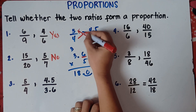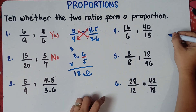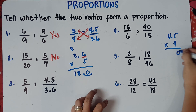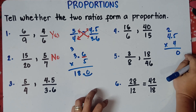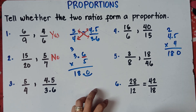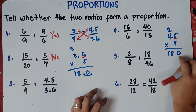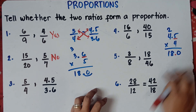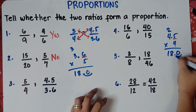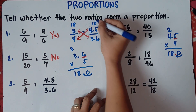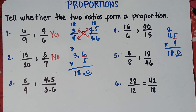Now let's check 4 times 4.5: 4 times 5 is 20, zero carry 2; 4 times 4 is 16, plus 2 is 18. We have one decimal place, so we move one unit from right to left — the answer is 18. Same answer! 18 and 18, therefore for number 3 our answer is yes. These two ratios will form a proportion.